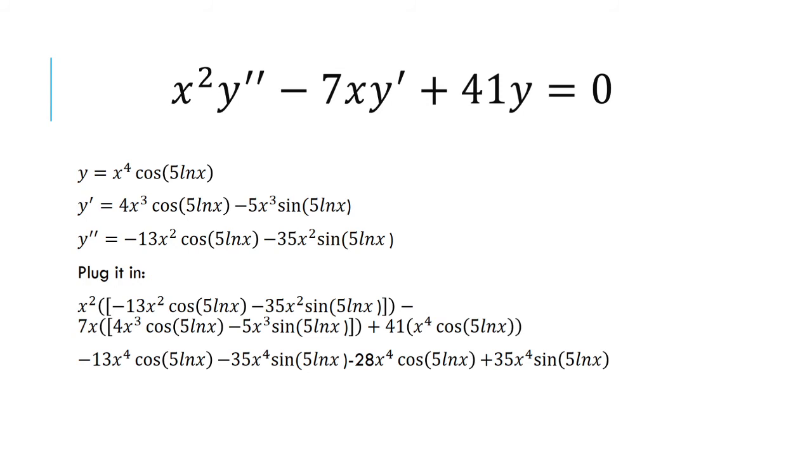Next, we go to negative 7x. We're going to multiply that by 4x cubed cosine and negative 5x cubed sine. Negative 7x times 4x cubed will give us negative 28x to the fourth. And negative 7x times negative 5x cubed will give us positive 35x to the fourth. And then we have our 41x to the fourth cosine 5 ln of x.